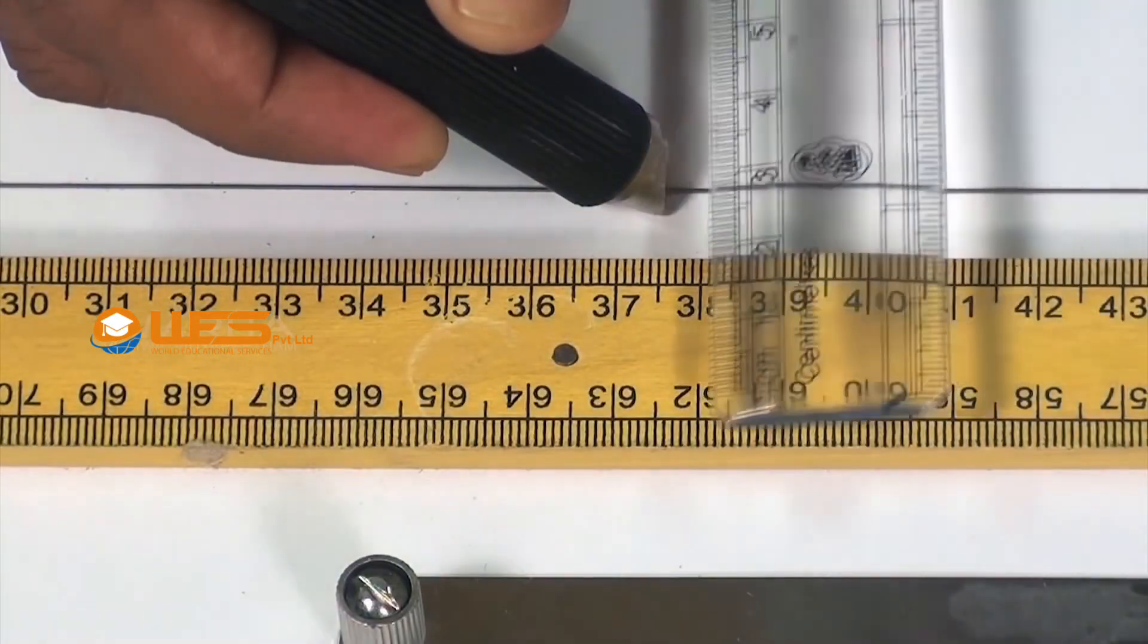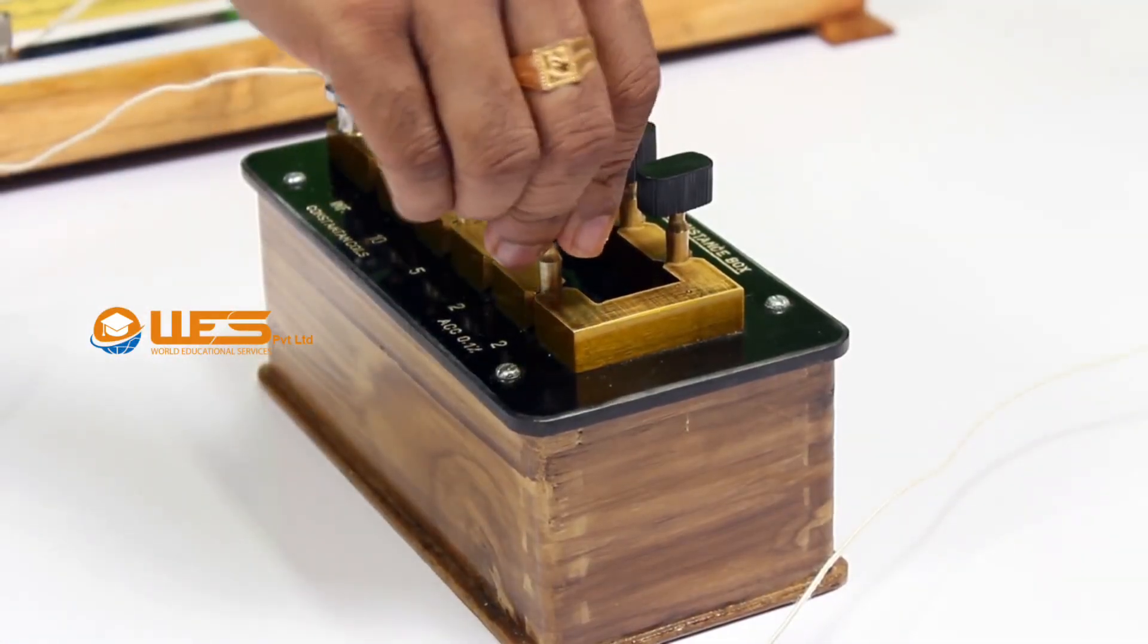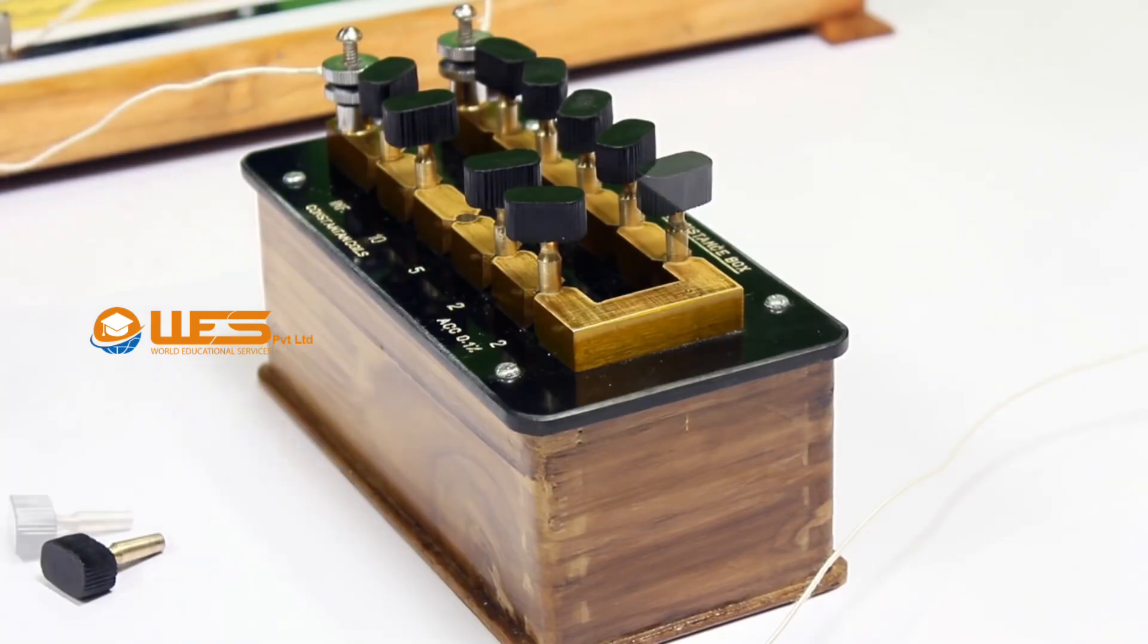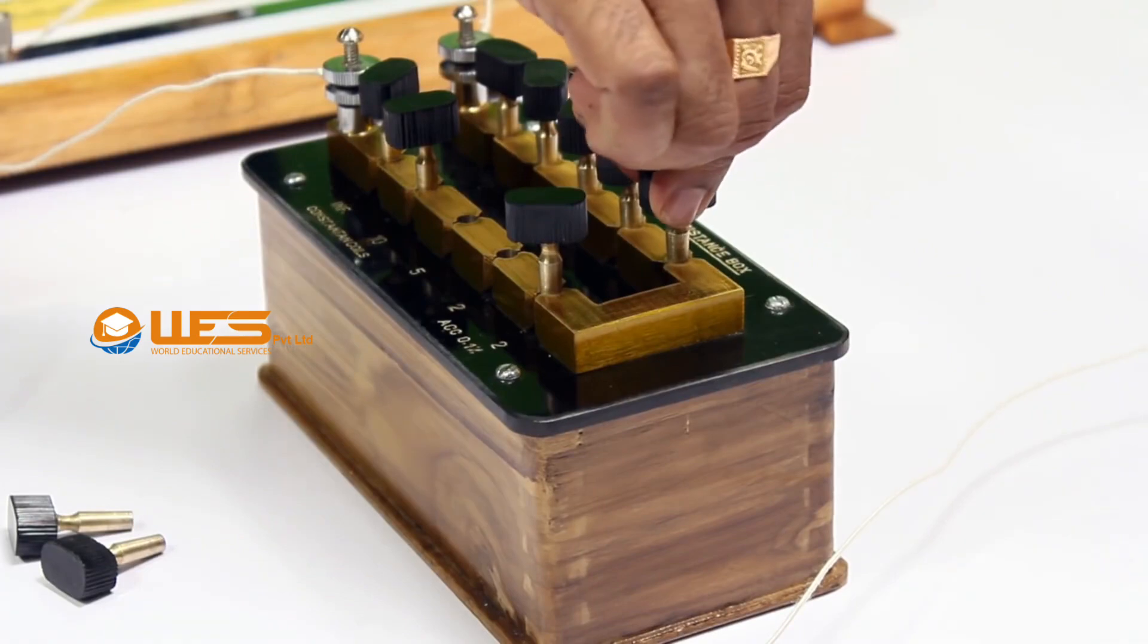Similarly, measure the balancing length and unknown resistance for four other nearby values of resistance R. Then, take the mean of these resistance values, which will be R1.